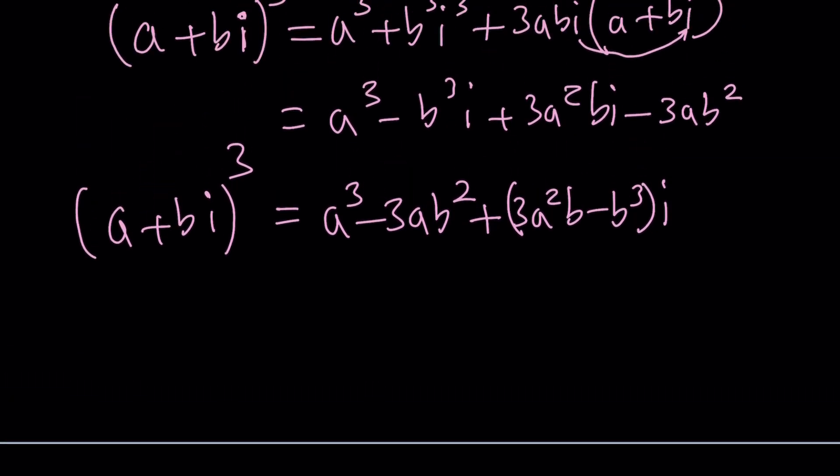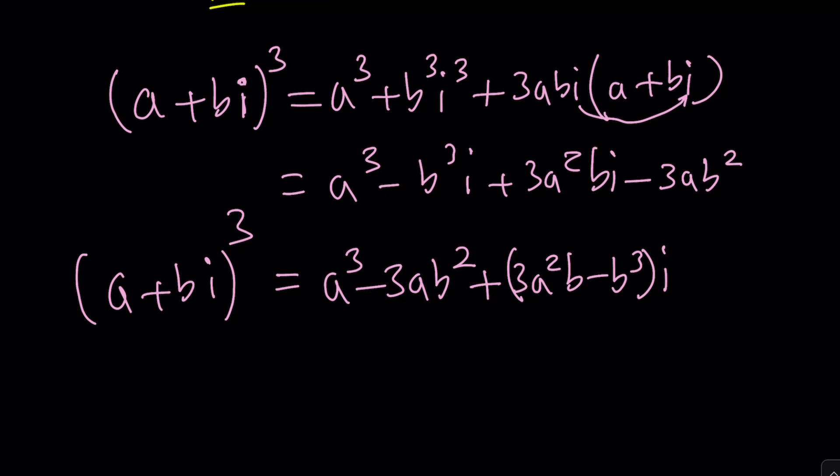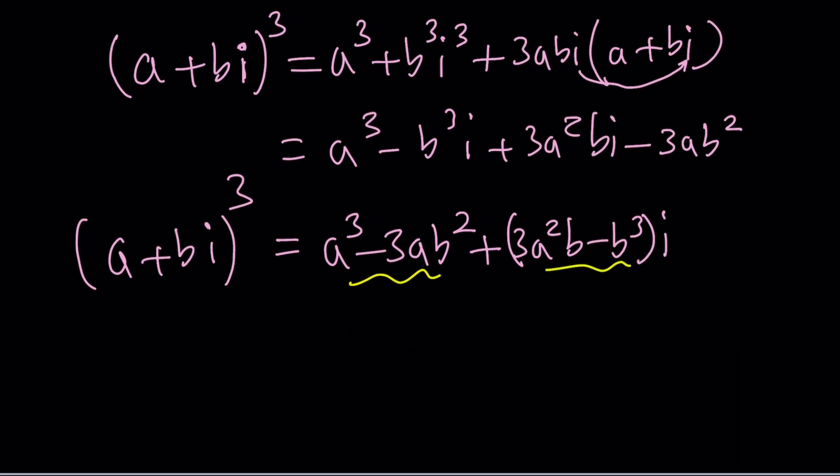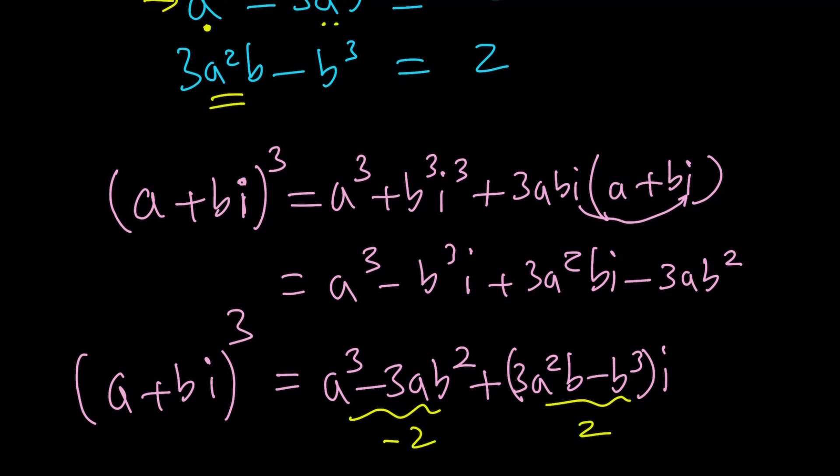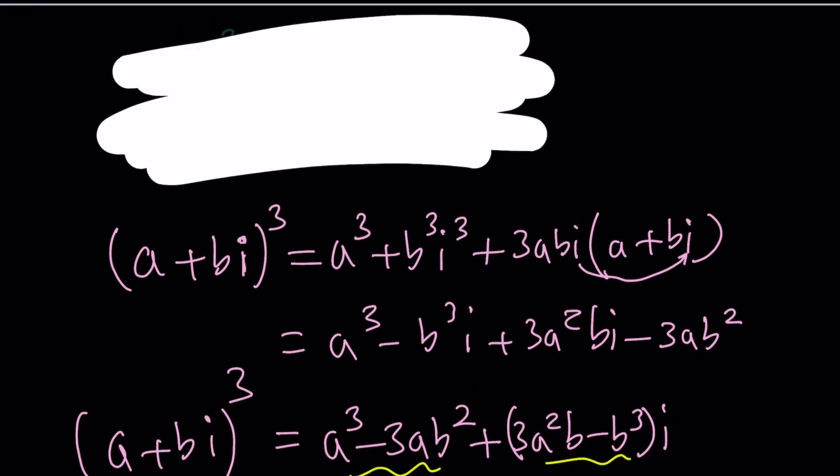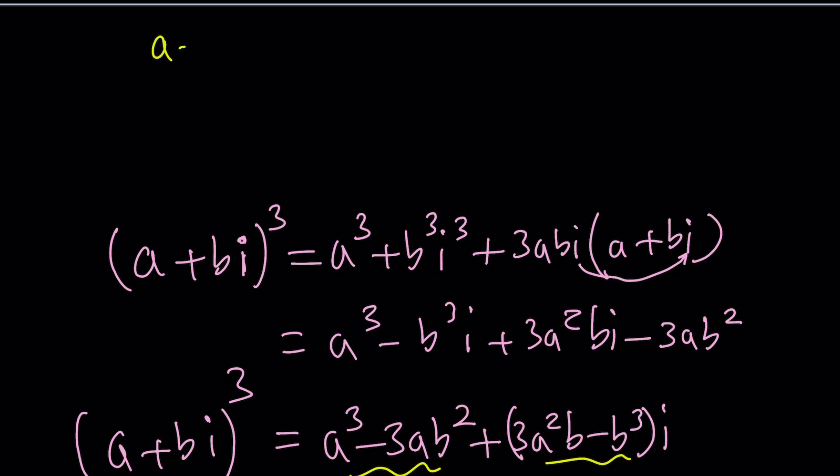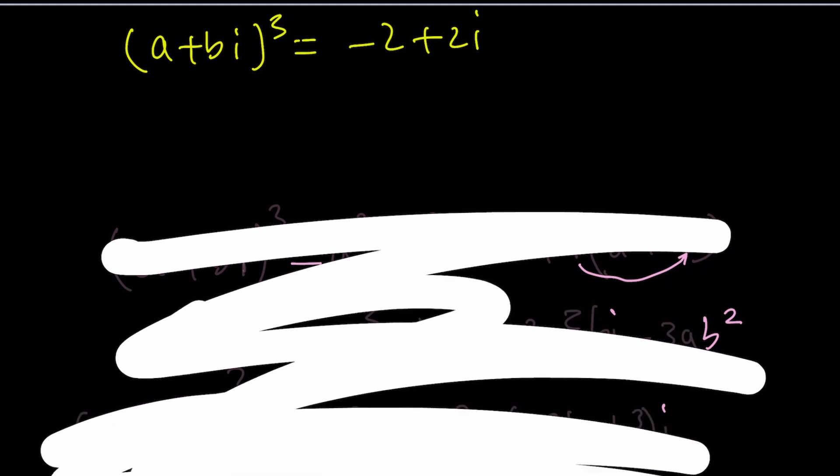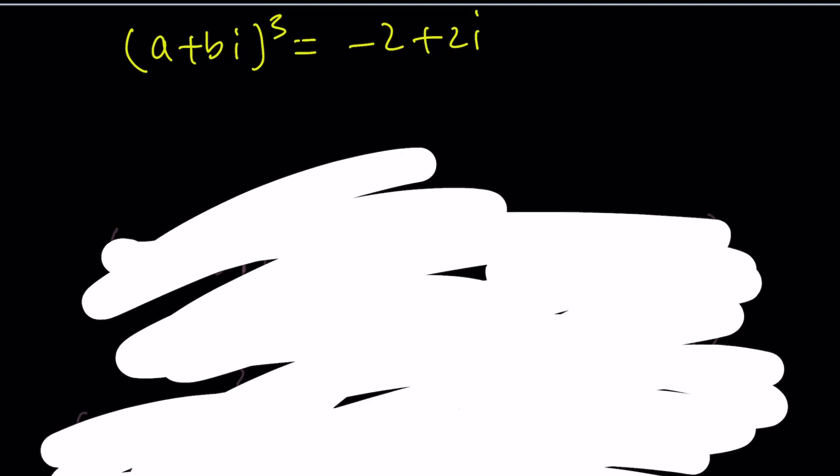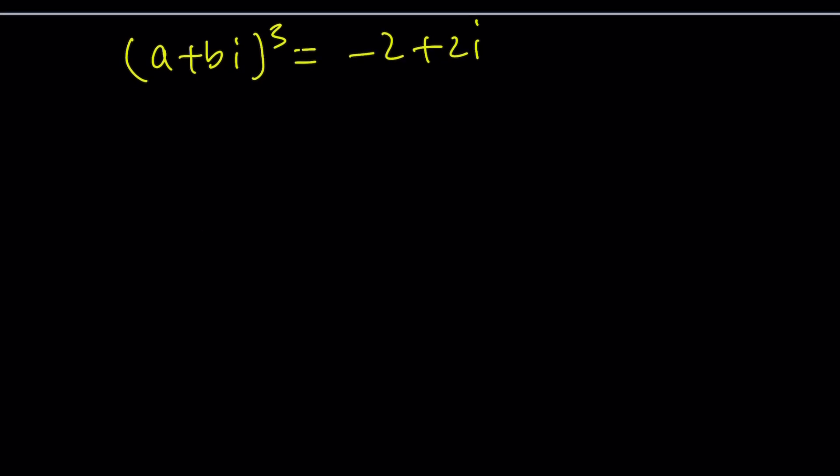We got this result, but we know these pieces from the original problem. So (a + bi)³ = -2 + 2i. I think this is awesome, don't you think? Let's solve this. We have the cube of a complex number equals another complex number. Before cube rooting, I'll write the right side in polar form.